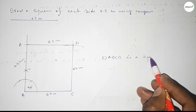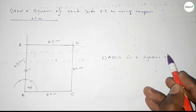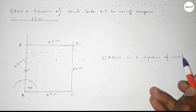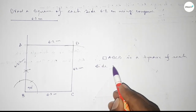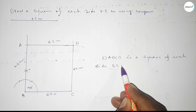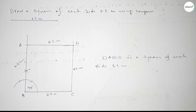Therefore ABCD is a square of each side 6.2 centimeters. That's all. Thanks for watching. If this video is helpful to you, please share it with your friends and like the video.